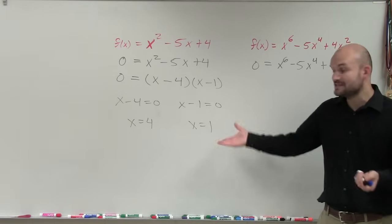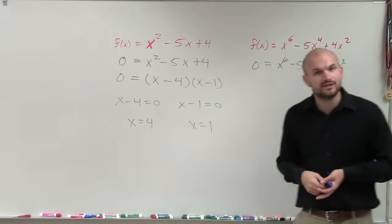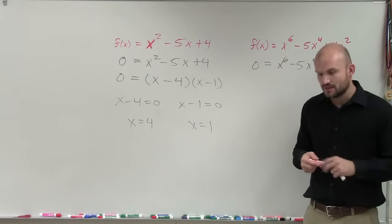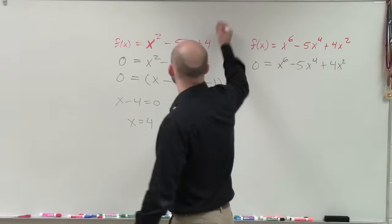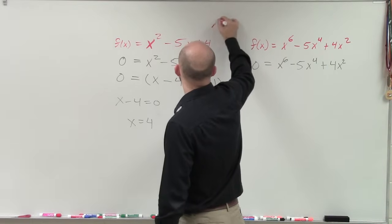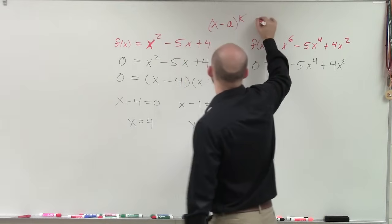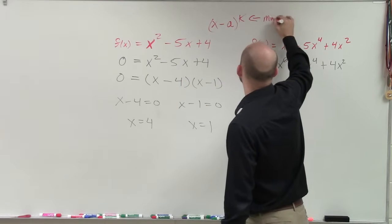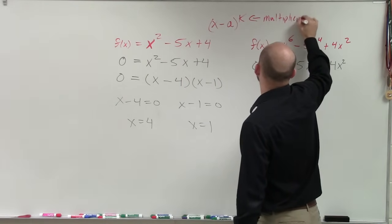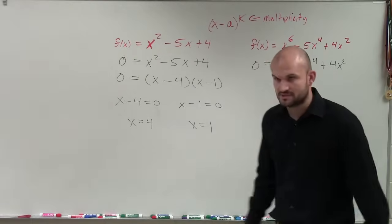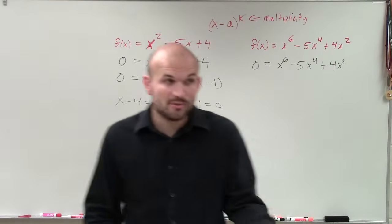But now, and these are also the x-intercepts, but now we need to determine what is the multiplicity. So in determining multiplicity, remember guys, we have the form of x minus a raised to the k, where k told you the multiplicity. That was in your notes.